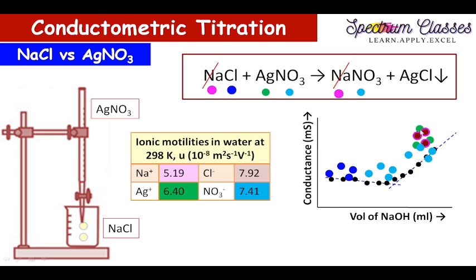So after the equivalence point, the conductance is mainly contributed by these ions. That is the labeling effect of Na+. The conductance increases because the number of ions — as I told you earlier, when concentration increases, the number of ions increases, and therefore the conductance value increases. One more point: due to the common ion effect of NO3−, the dissociation is slightly lesser compared to the initial one. So the conductance value is contributed by Na+, Ag+, and NO3− combined, and therefore it increases sharply after the equivalence point.